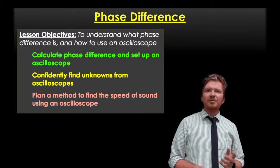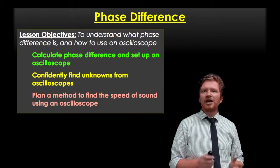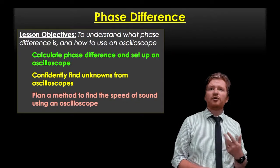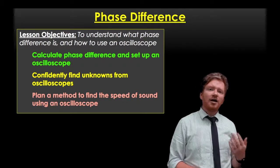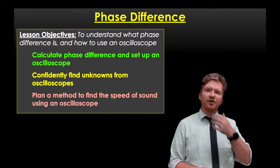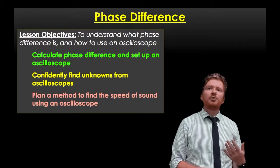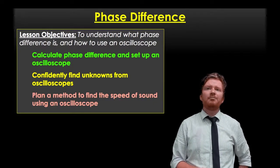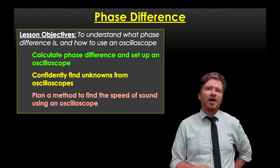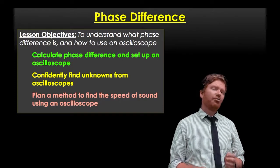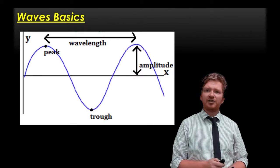Our aim today is to make sure that you can all calculate phase difference and also set up an oscilloscope, basically describe to me what some of the controls do. I would also like it if you could confidently find unknowns using an oscilloscope, and at the end of this video I would like you to start thinking about a method to work out the speed of sound using an oscilloscope, which is a pretty cool practical that we're going to try in our lesson.